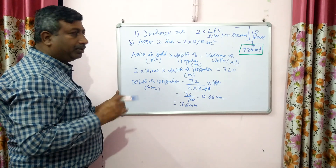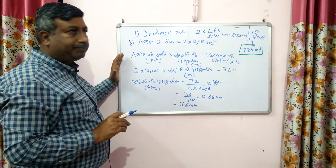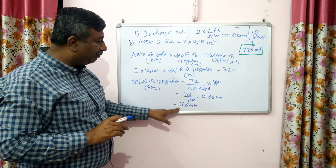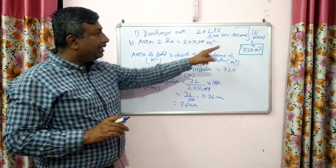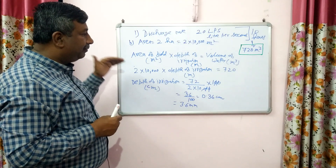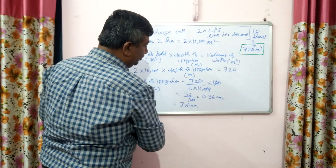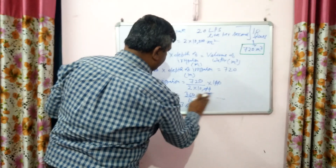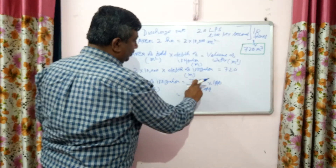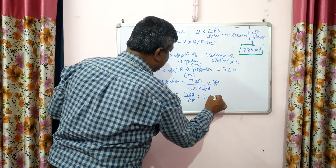Calculating: 720 / 20,000 = 36/1000 metres, which equals 3.6 centimetres. This is the depth of irrigation. It means 2 hectare area can be irrigated up to a depth of 3.6 centimetres in 10 hours if the discharge rate is 20 litres per second.